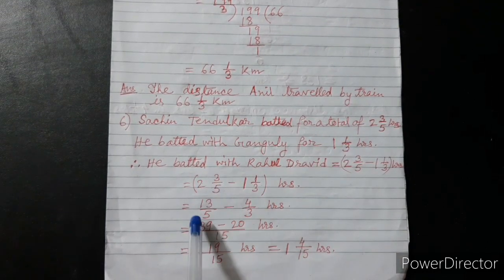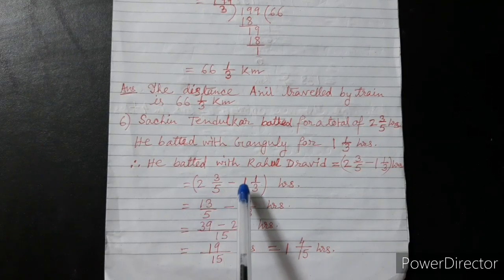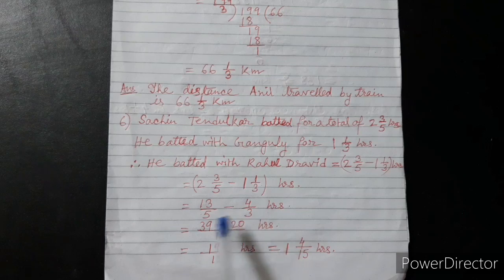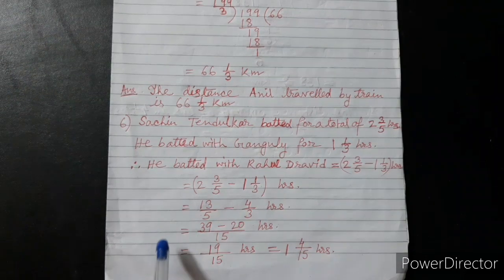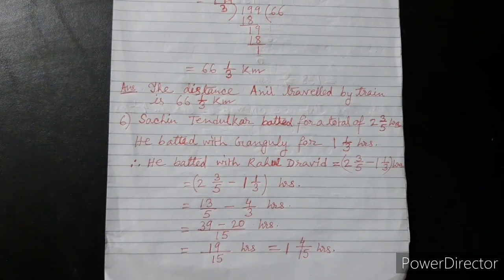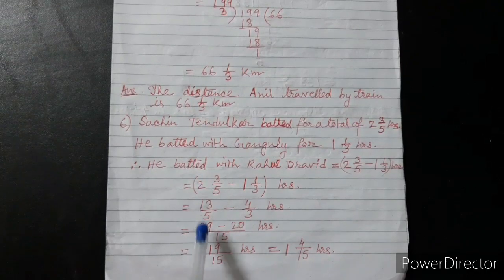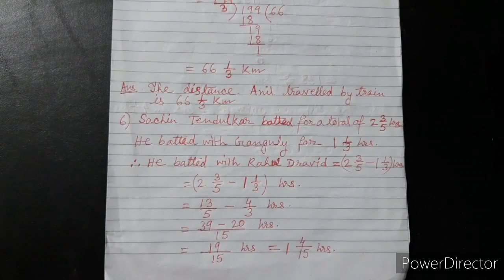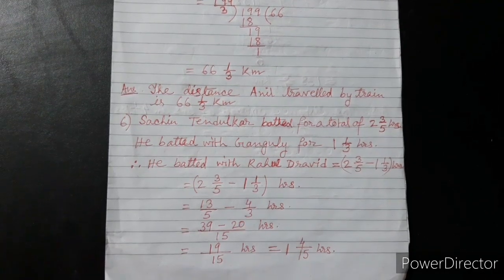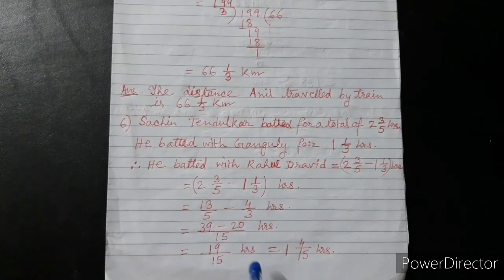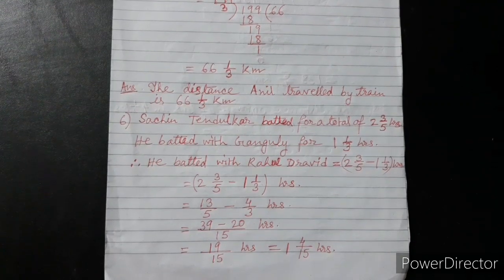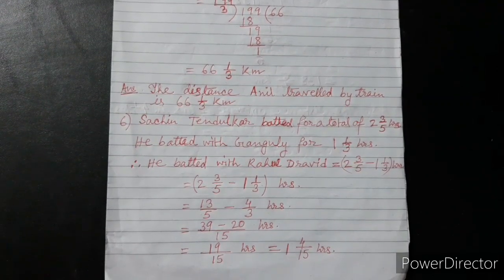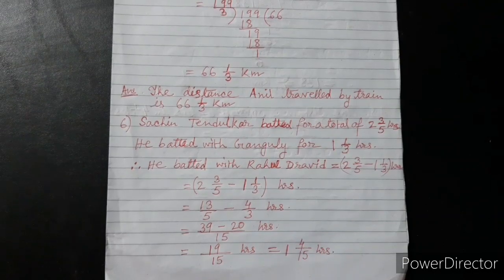Now, mixed fraction ko improper fraction mein convert karo. So it will be 13 by 5 minus 4 by 3. Now LCM — so I have 15. 5 into 15 gives 3; 3 into 13 means 39. Minus: 3 into 15 gives 5; 5 into 4 means 20. 39 minus 20 equal to 19. So 19 by 15 — I have 1 and 4/15 hours.